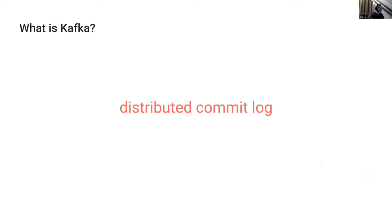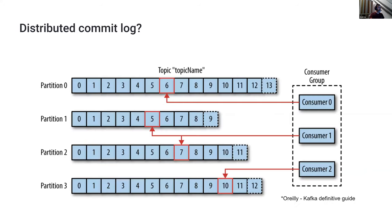What is Kafka? At a very high level, it's a distributed commit log. When you write to Kafka, you write to topics — that's the dataset inside of Kafka. Topics are split into partitions and distributed across the cluster. As a producer, you produce data into a topic and each message has an offset. As a consumer, you can form consumer groups and consume the latest records, or consume all records from a specific offset in a particular partition. That's a very brief primer on Kafka.